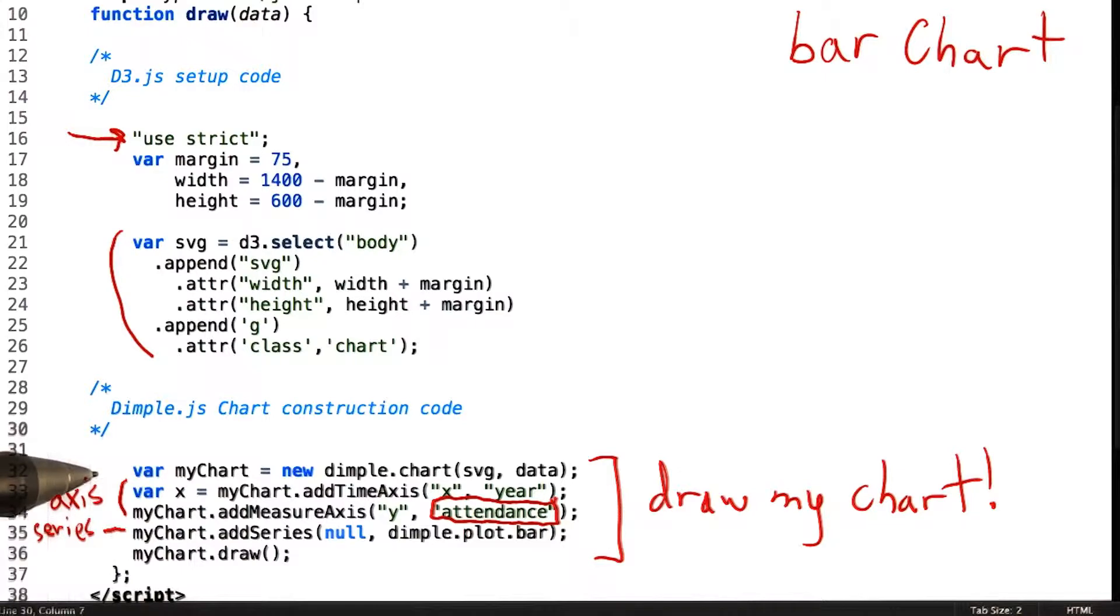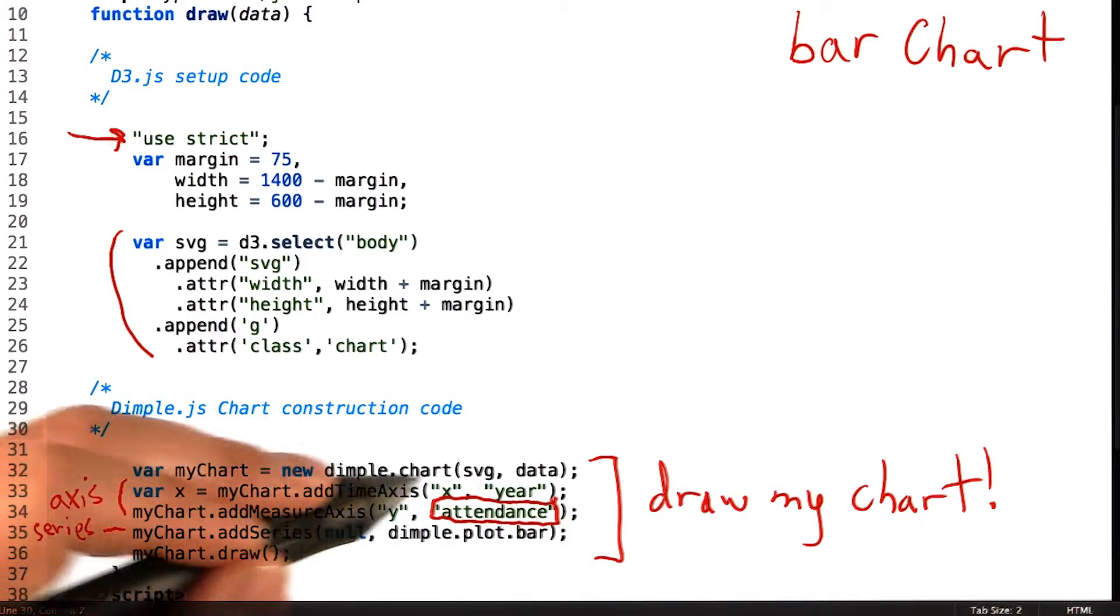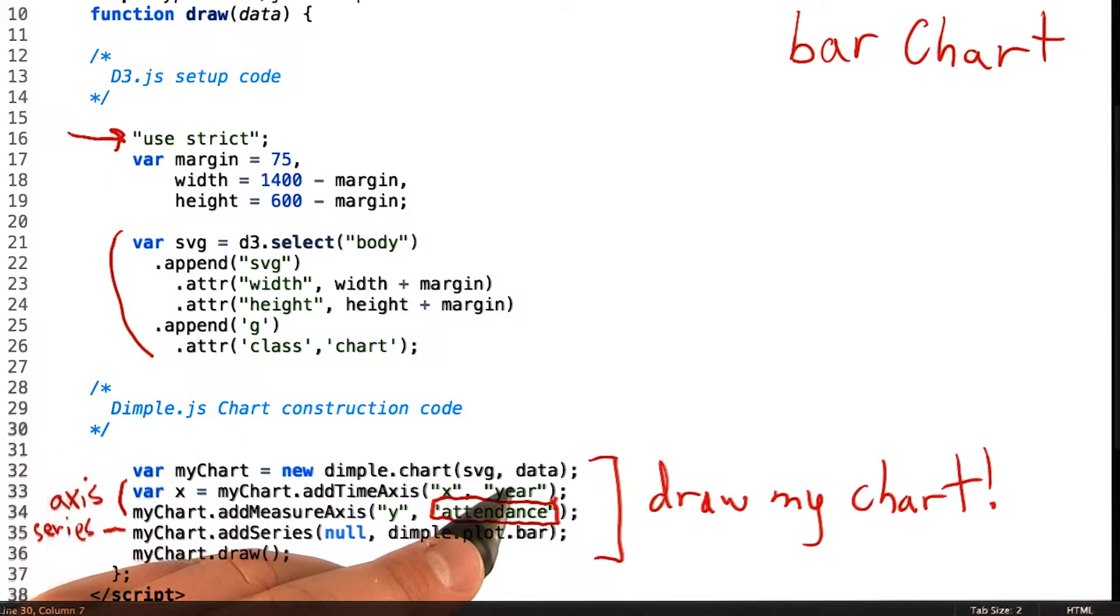The first line creates a new chart object in the specified element with the specified data. The first argument is a D3 selection representing the SVG element which we'd like to append our Dimple chart to.